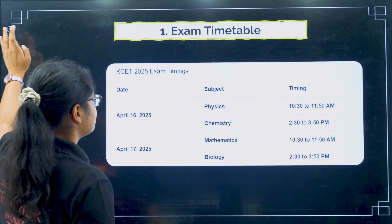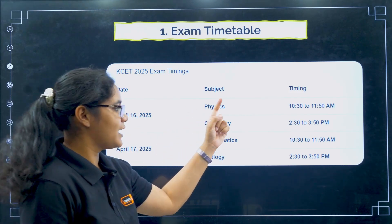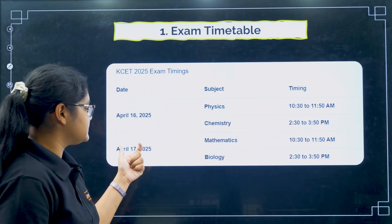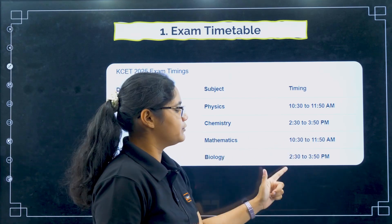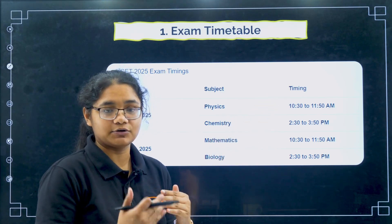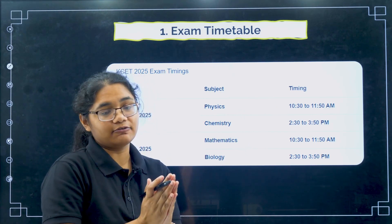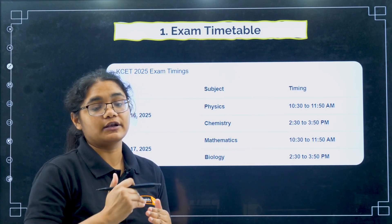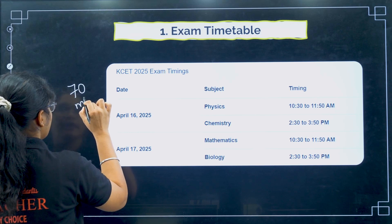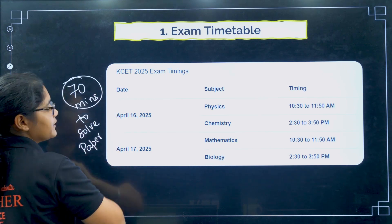Let us get started with the exam timetable. On 16th April, the first paper is Physics from 10:30 to 11:50 and Chemistry from 2:30 to 3:50. On April 17th, Maths is from 10:30 to 11:50 and Bio from 2:30 to 3:50. You will be entering the examination hall at 10:20. At 10:30 the question paper is given, and from 10:30 to 10:40 you fill the OMR sheet details. From 10:40 you start writing answers, giving you exactly 70 minutes to solve the paper.